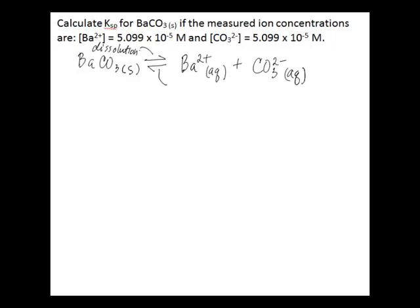The reverse reaction arrow is indicating precipitation of barium ion with carbonate ion to give you the solid barium carbonate in return. So we're talking dissolution and precipitation when we're talking about solubility equilibria.